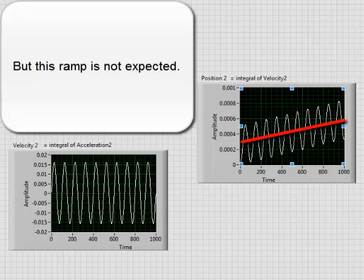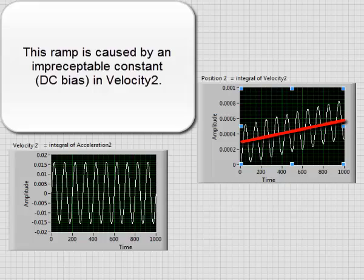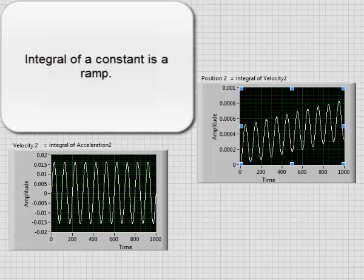But the ramp is not expected. This ramp is caused by an imperceptible constant DC bias in velocity 2. Integral of a constant is ramp.